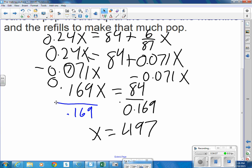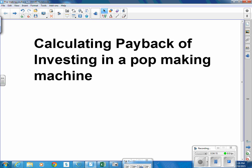But from this point on, we have pop for 7 cents a can. So we have calculated payback time of investing in a pop-making machine or some other kind of machine. We would follow the same ideas. Thank you.